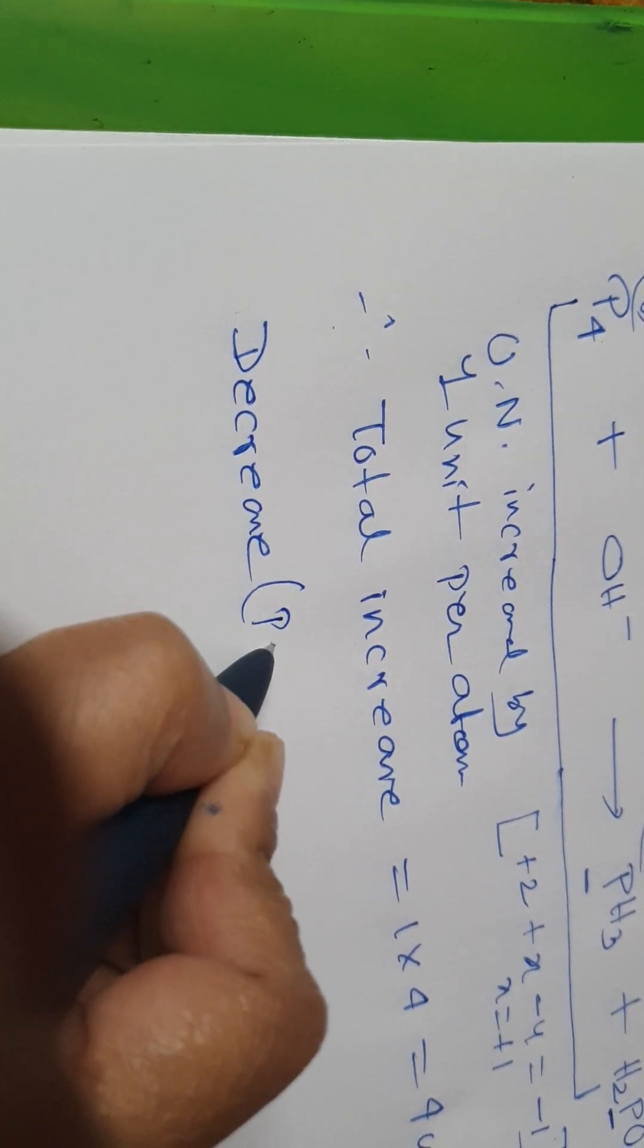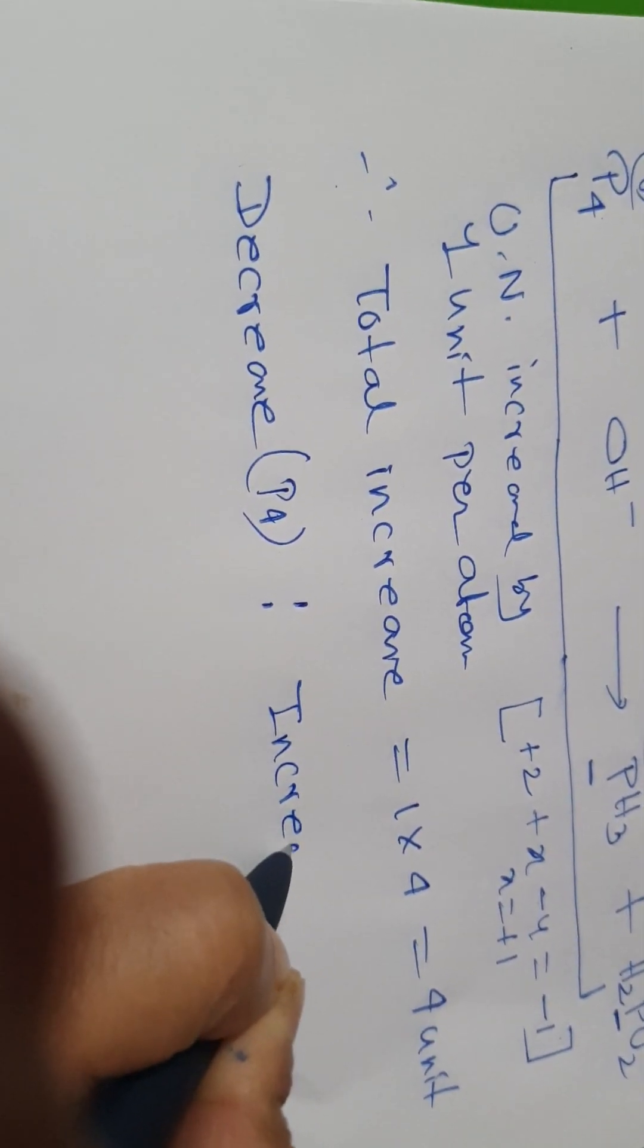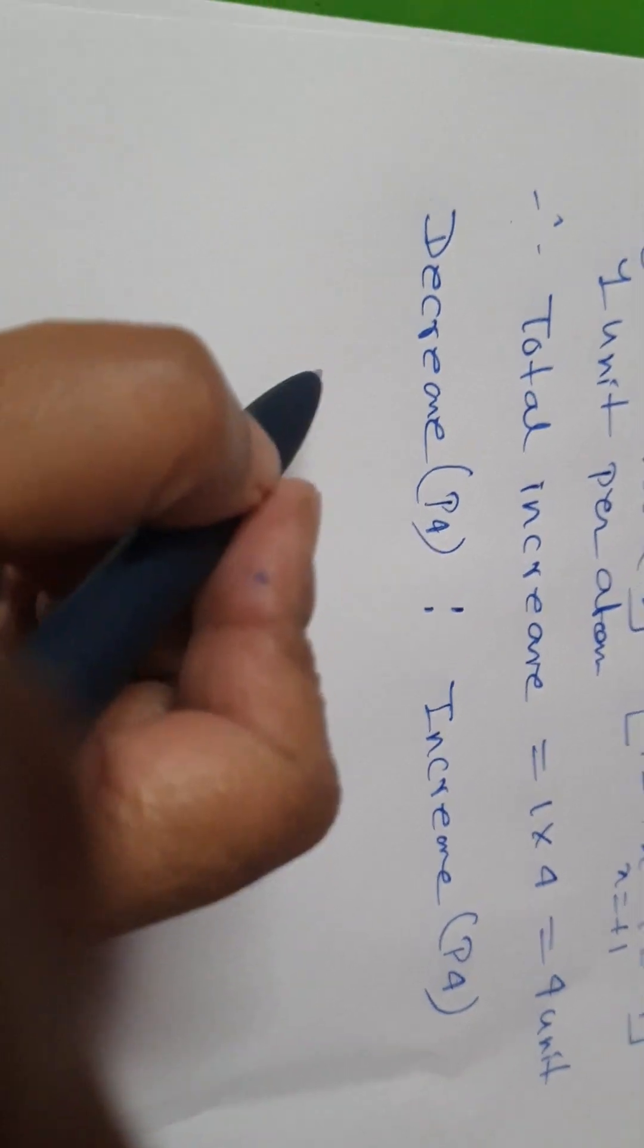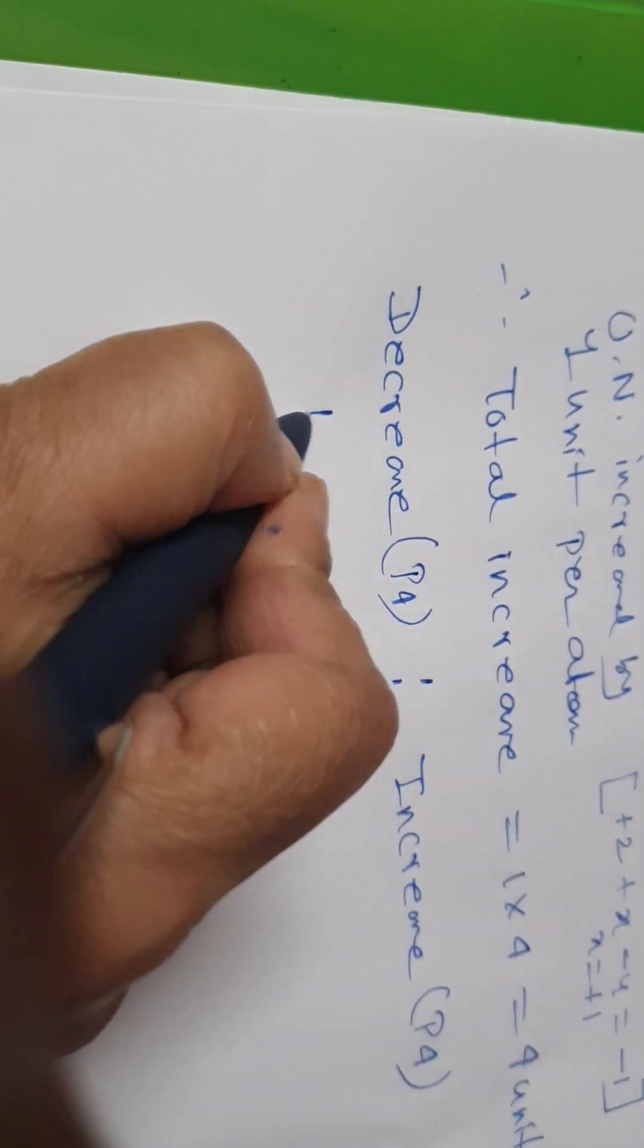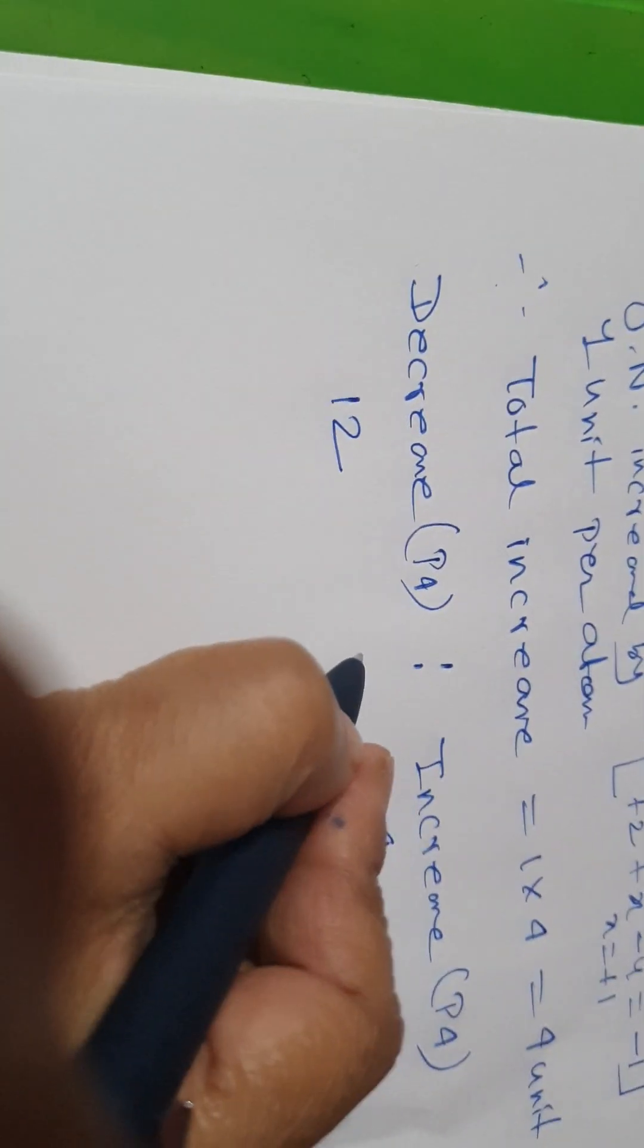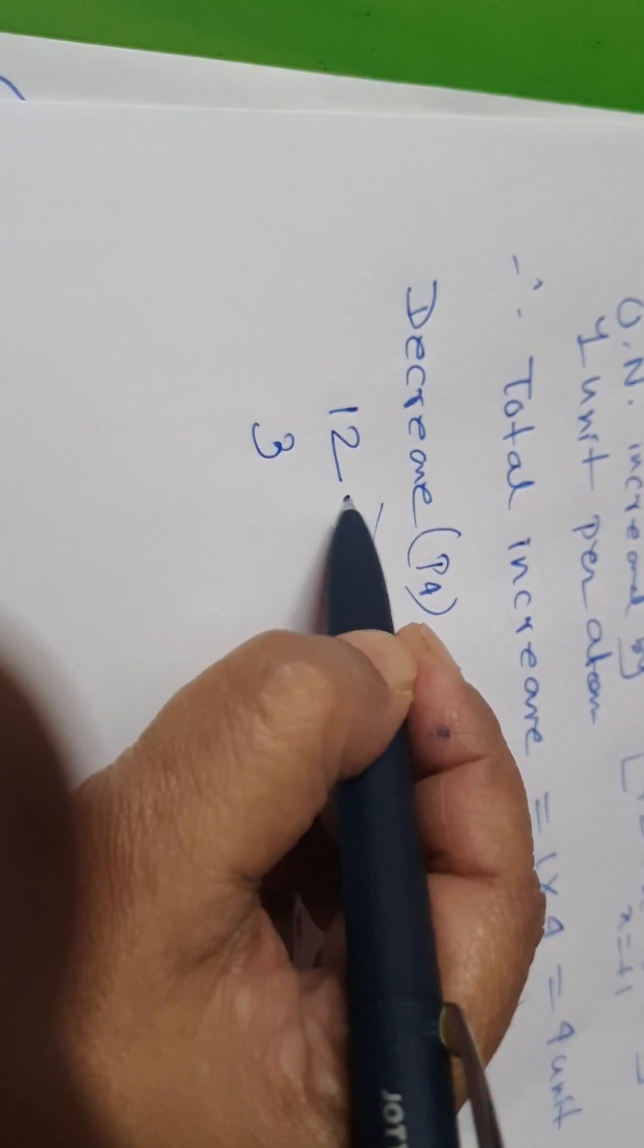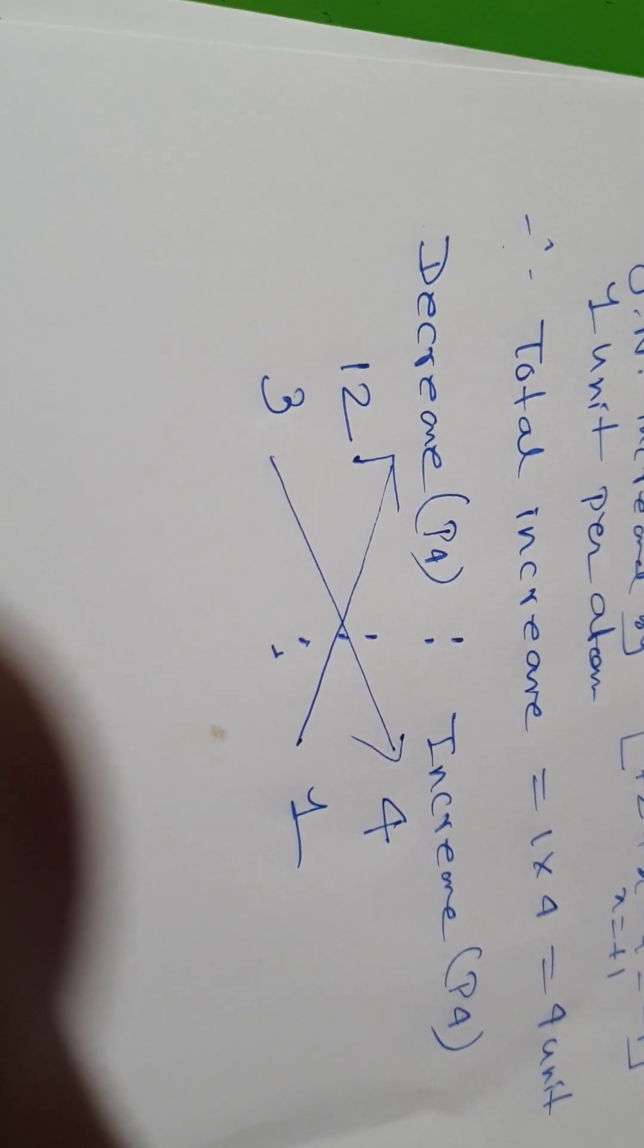Look, both are phosphorus. Decrease P4, increase P4. According to oxidation number rules, the ratio of decrease to increase: decrease is 12 unit, increase is 4 unit. The ratio comes out to be 3 is to 1. So where decrease has occurred, cross multiply, multiply by 1. Where increase has occurred, multiply by 3.